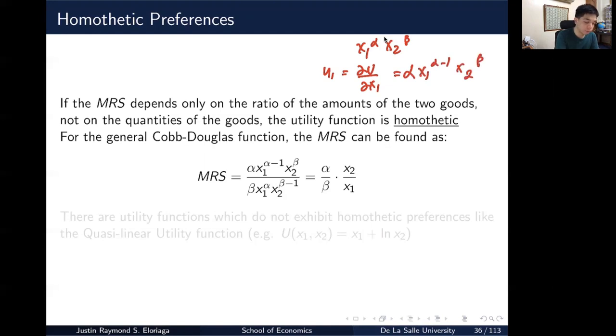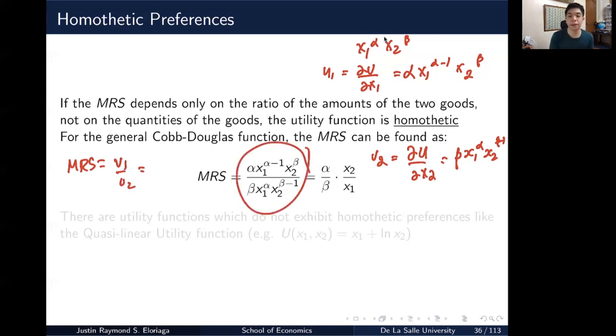Then u2 is going to be equal to the partial of the utility function with respect to x2. So this is equal to beta, x1 alpha, x2 beta minus 1. So I have those two things there. Then to get the MRS, your MRS is just the negative of the slope of the indifference curve, which is just u1 over u2.